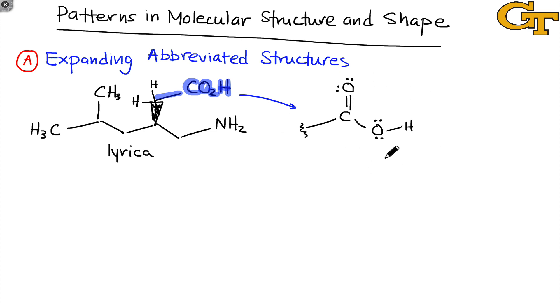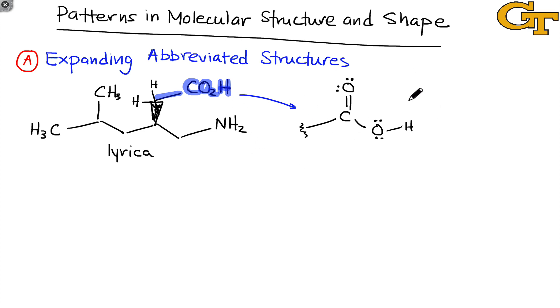Now everything's looking good and everything's satisfying the octet rule. So in the first part of the experiment, you'll work through a number of these abbreviated structures found primarily within molecules of pharmaceutical interest and expand them into full Lewis structures containing multiple bonds and lone pairs.